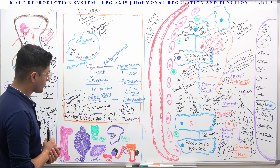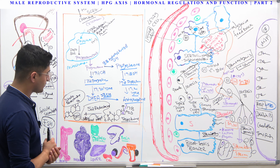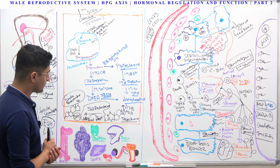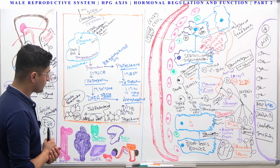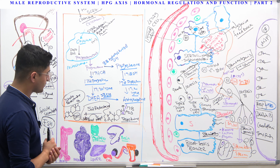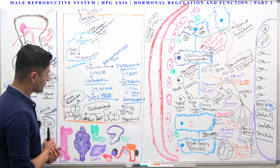When there's decreased LH production, your testes are going to become smaller. The other thing that also happens is that whenever there's low endogenous testosterone, there will be an imbalance between estrogen and testosterone levels. In peripheral tissues and even in the testes, there is an enzyme called aromatase, which adds an aromatic ring and converts testosterone into a compound called estradiol — an estrogen.